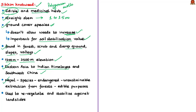In Nepal, this species has become endangered due to unsustainable extraction from forests for edible purposes, as it has high demand in the market. Some uses of the Sikkim knotweed are that its seeds and young shoots are used raw or cooked. Its tender shoots are also eaten for quenching thirst. The plant is an efficient soil binder and is used to revegetate and stabilize landslides.